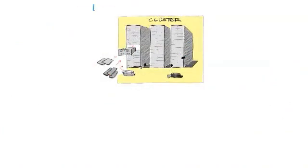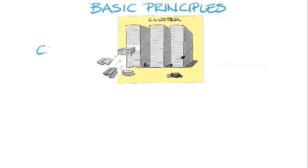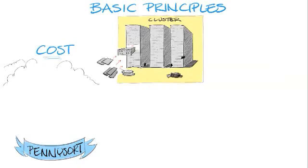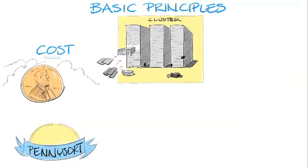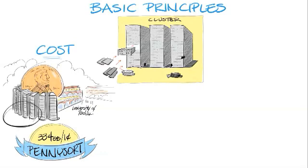The cluster architecture was designed with some basic principles in mind. One: to capitalize on commodity hardware, where processing cores and disk drives are at a cost within the economics of the cloud. Here's a metric for you — Penny Sort. Penny Sort is a sort benchmark that measures the amount of data that can be sorted for, well, a penny's worth of system time. According to SortBenchmark, in 2011, the University of Padova in Italy set the Penny Sort record at 334 gigabytes — meaning they sorted 334 gigabytes' worth of data for a penny.